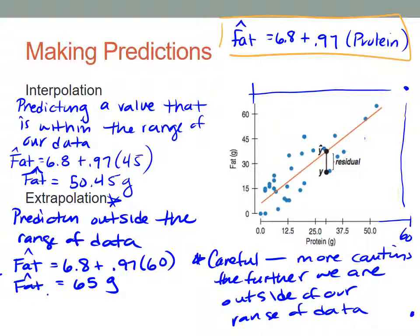In your math classes, I know you learned to plug in for this value, fat value maybe, and you solve backwards to get protein. That's not going to work in statistics. This equation is specially created in order to minimize these vertical residuals. So we can't use it backwards. We can only use this to predict fat.